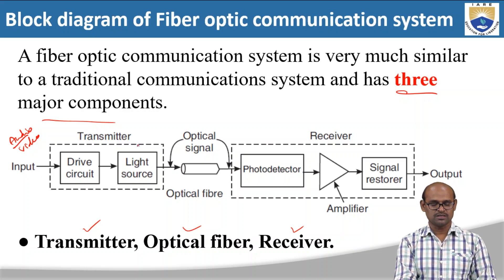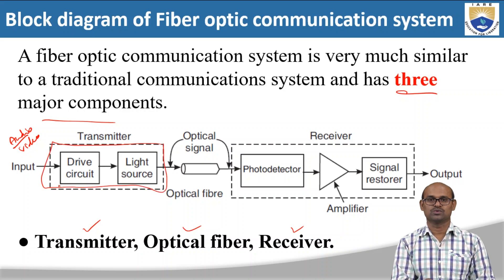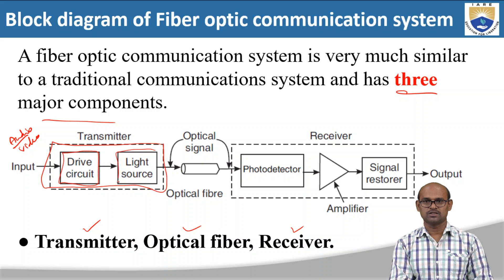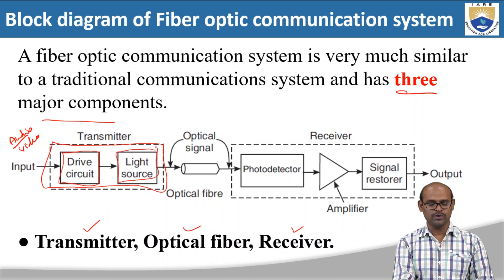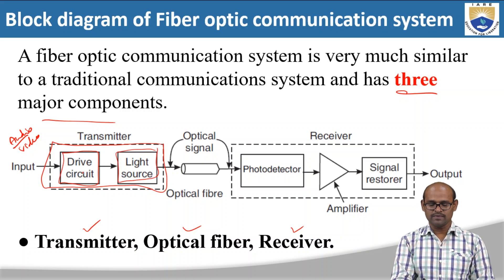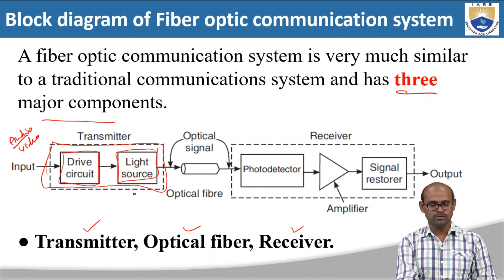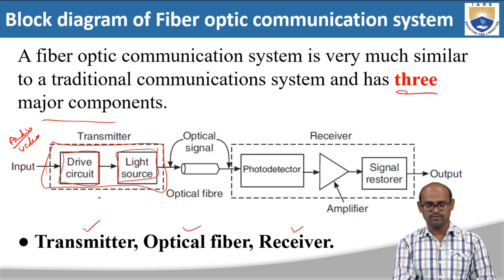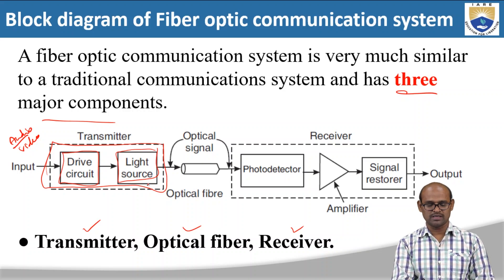The transmitter consists of a drive circuit and there is also a light source. We will see the function of the drive circuit and light source present in the transmitter. This is the first component. The second component is the optical fiber. Once the audio input is given to the transmitter, the transmitter will deliver a signal that will be given as input to the optical fiber.